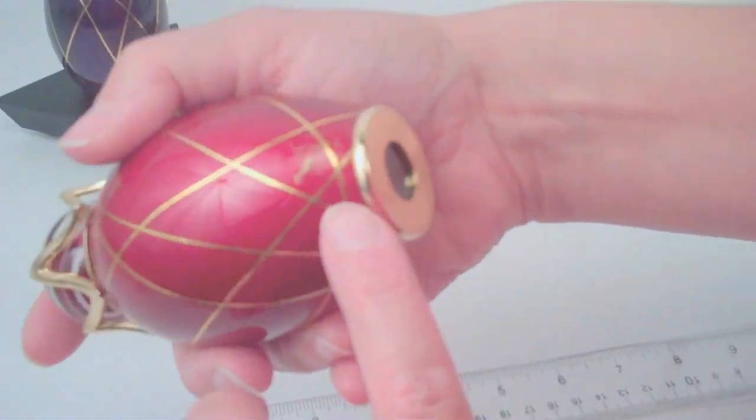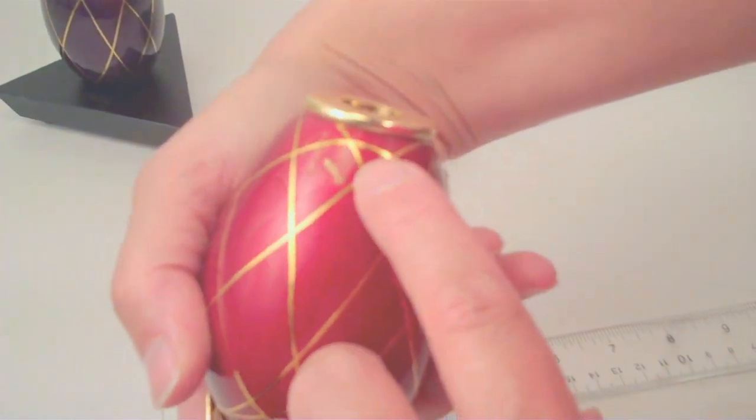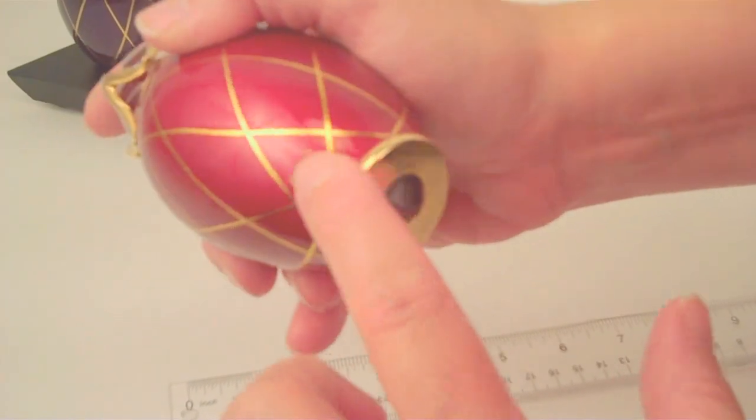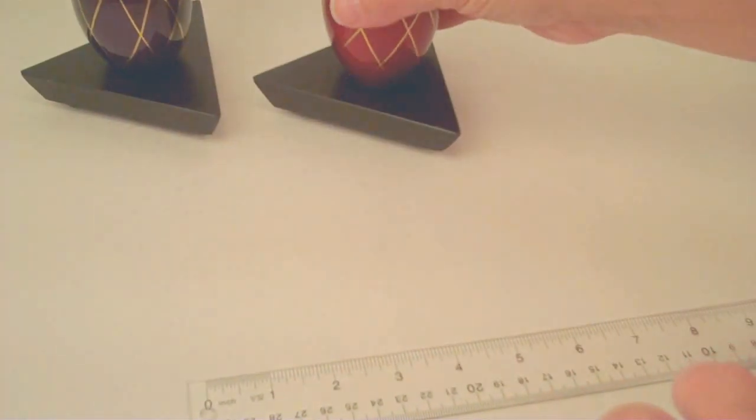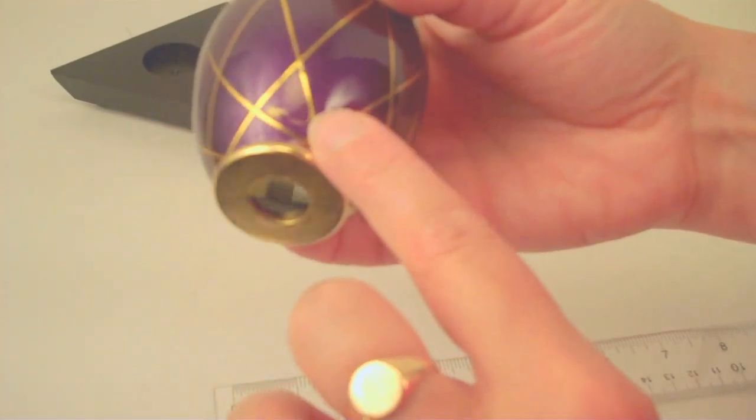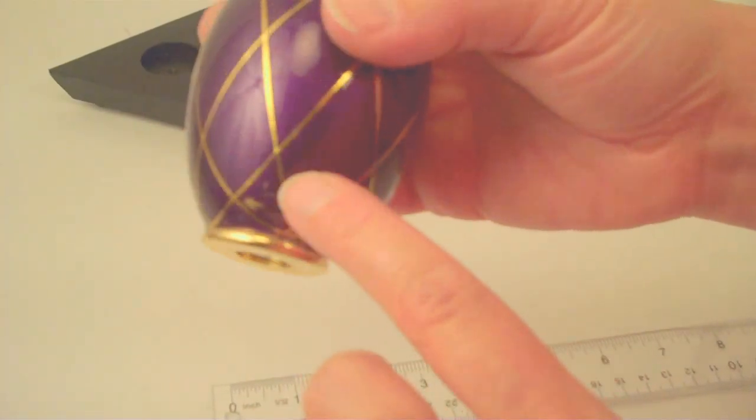Frank also signs his work by adding his mark directly into the paint on the exterior of the egg. And here on the purple one, we'll see his mark here in the gold paint directly on the exterior.